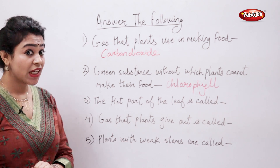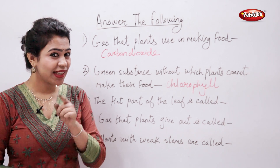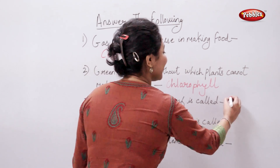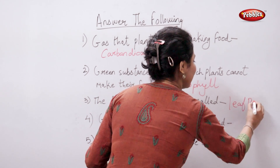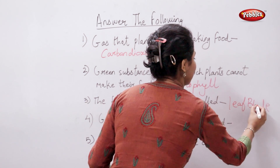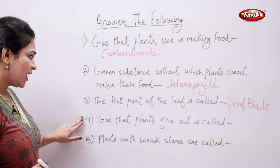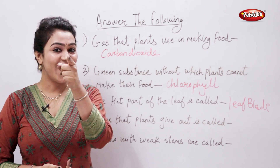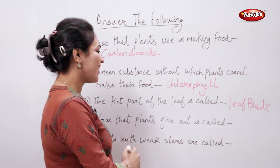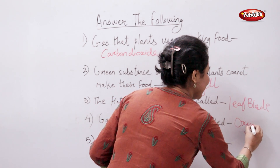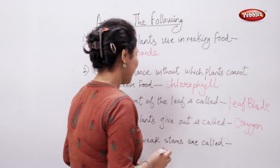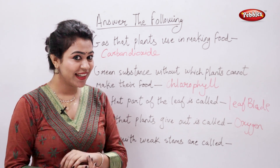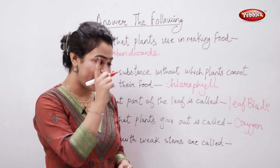The flat part of the leaf is called — is that — leaf blade. Yes. The gas that plants give out is called oxygen — such an easy answer. Plants with weak stems are called climbers. Right.